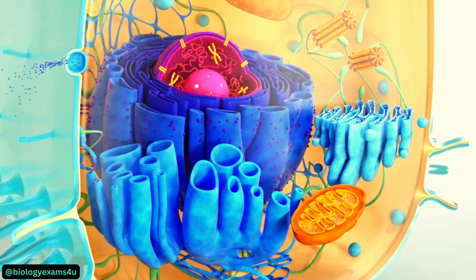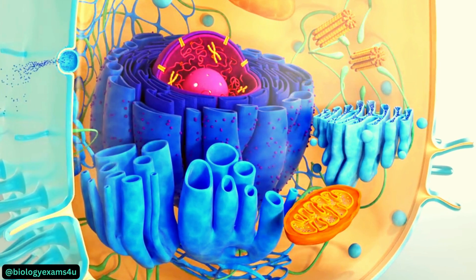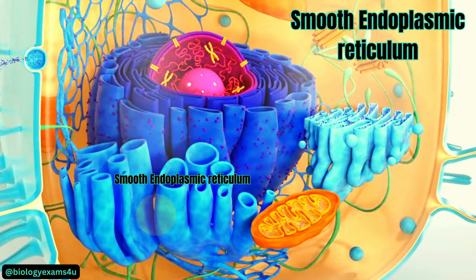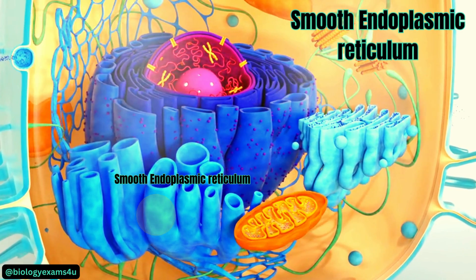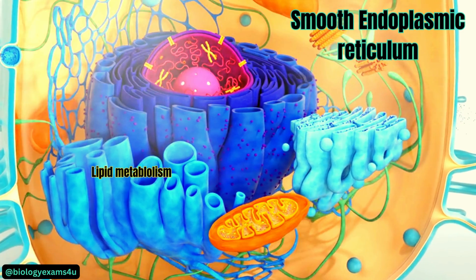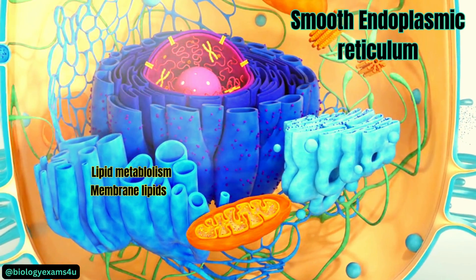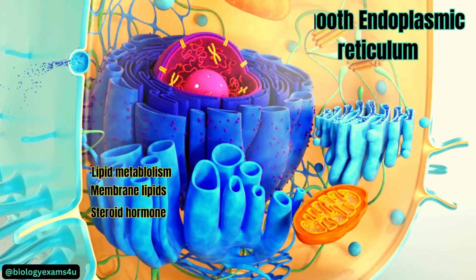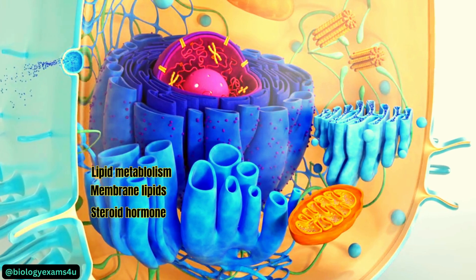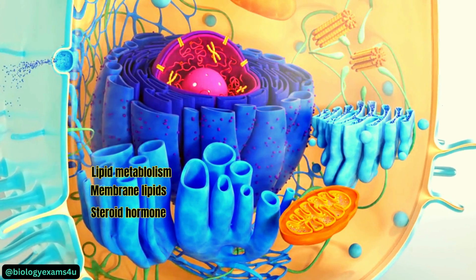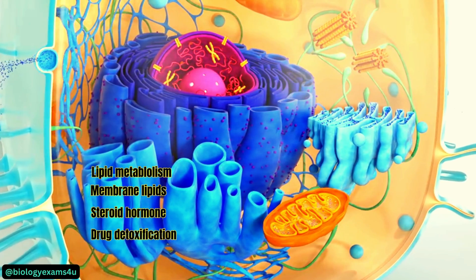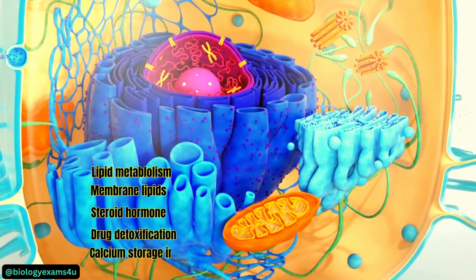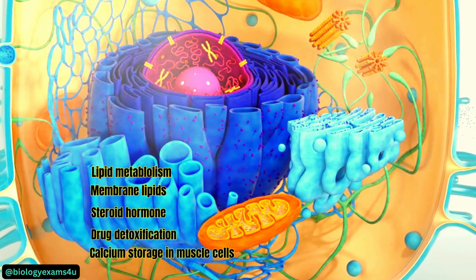Apart from the rough endoplasmic reticulum, there is smooth endoplasmic reticulum (SER) where ribosomes are absent, so the surface is smooth. SER is involved in lipid metabolism — it synthesizes membrane lipids including phospholipids and cholesterol, and also steroid hormones such as estrogen and testosterone. SER is abundant in the liver where it is involved in detoxification of drugs, making them more soluble and easier to excrete. In muscle cells, the ER is called the sarcoplasmic reticulum, where it stores calcium in its lumen.